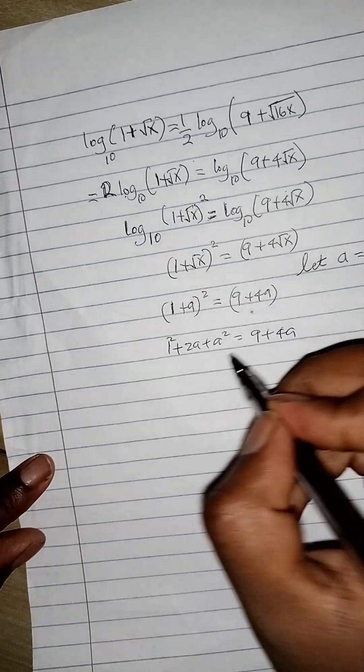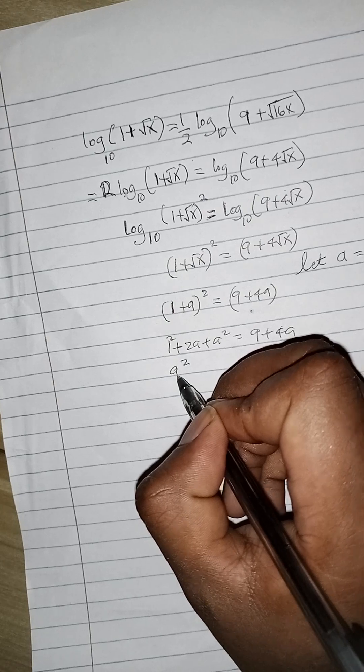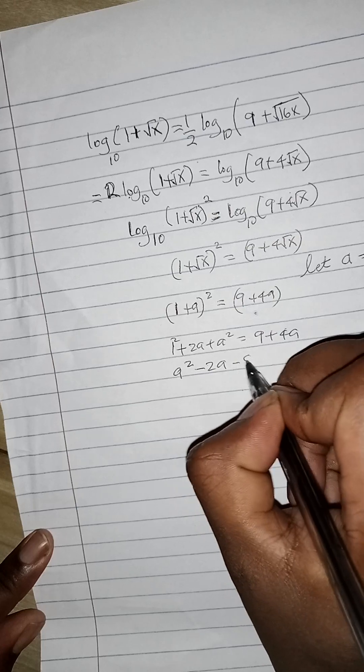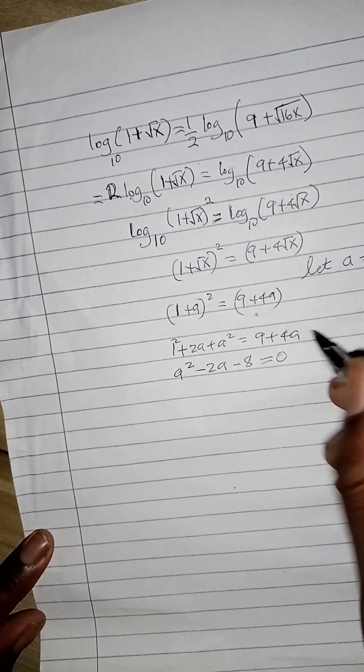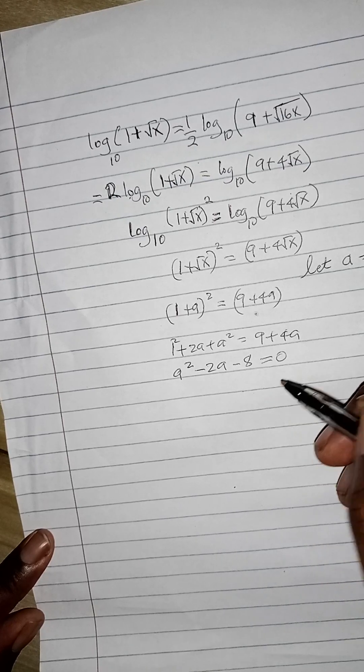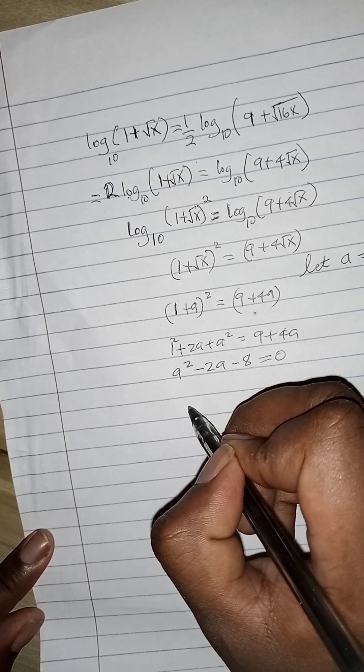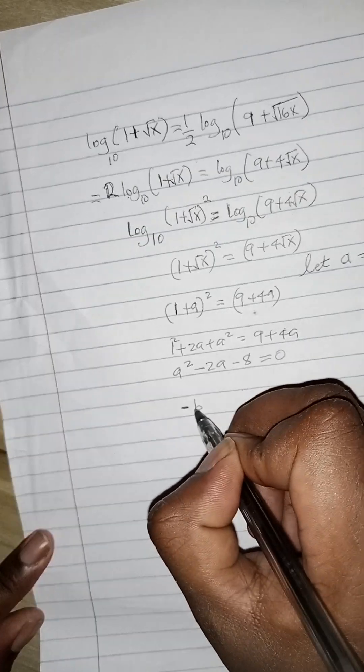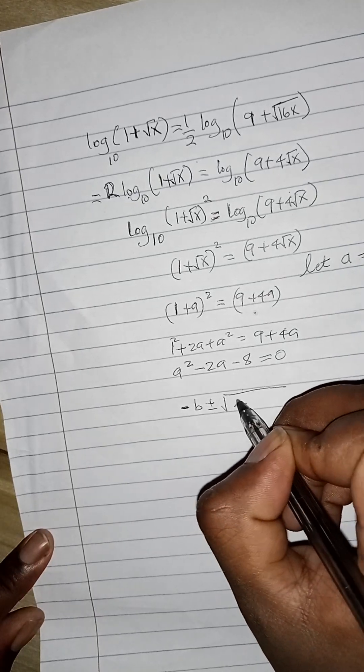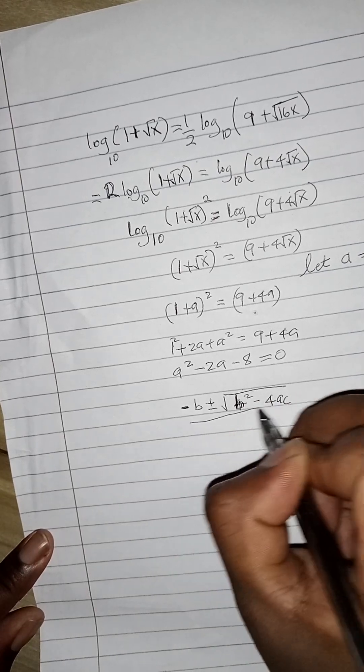You will get a squared minus 2a minus 8 is equal to 0. Now this is a quadratic equation. You're going to get two values of a, and you know the formula for a quadratic equation is minus b plus or minus bracket (b squared minus 4ac) all over 2a.